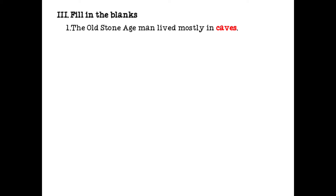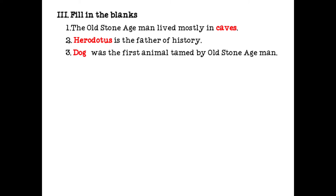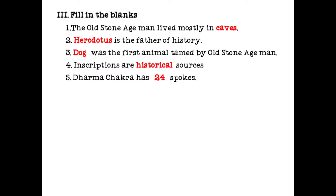Fill in the blanks. The old stone age man lived mostly in caves. Dash is the father of history — Herodotus. Dash was the first animal tamed by old stone age man — dog. Inscriptions are dash sources — historical. Dharma Chakra has dash spokes — 24.